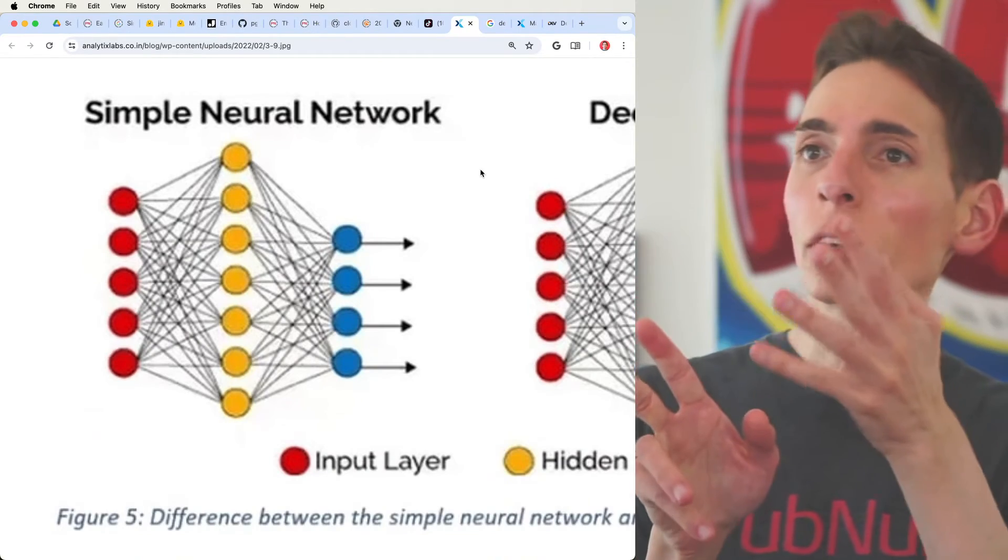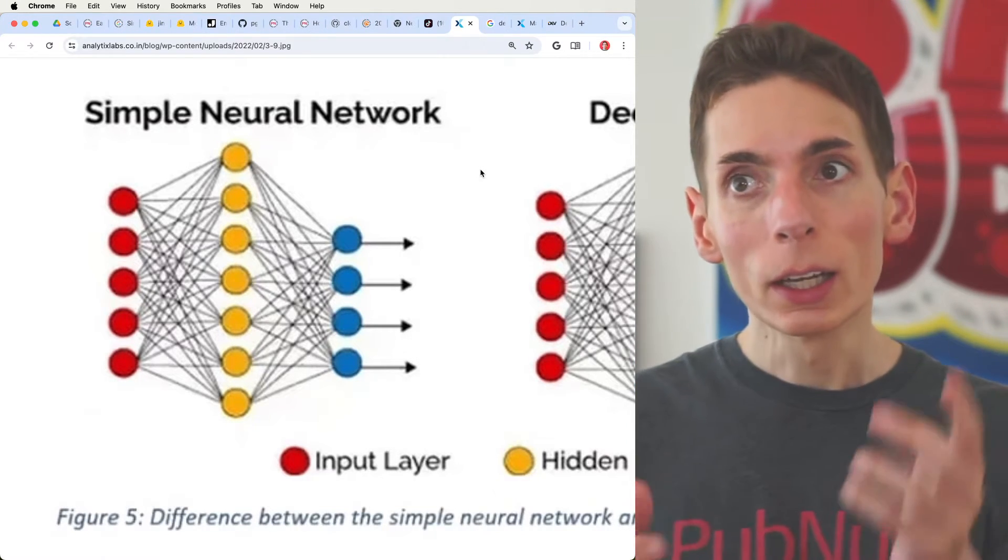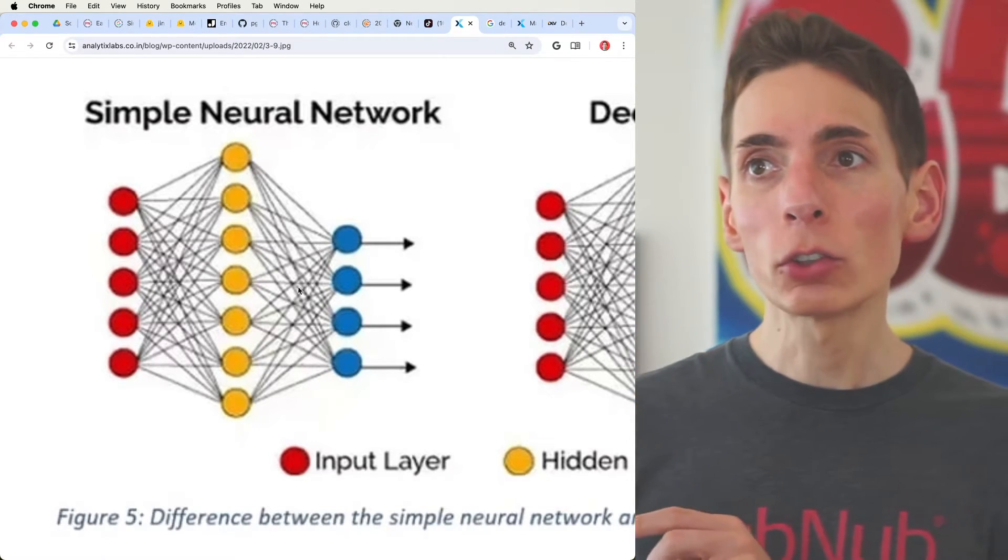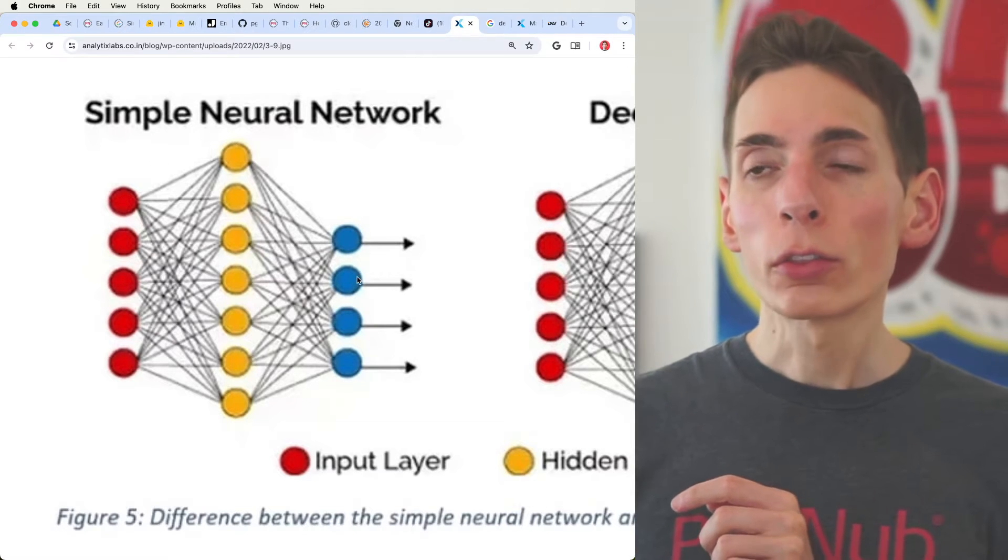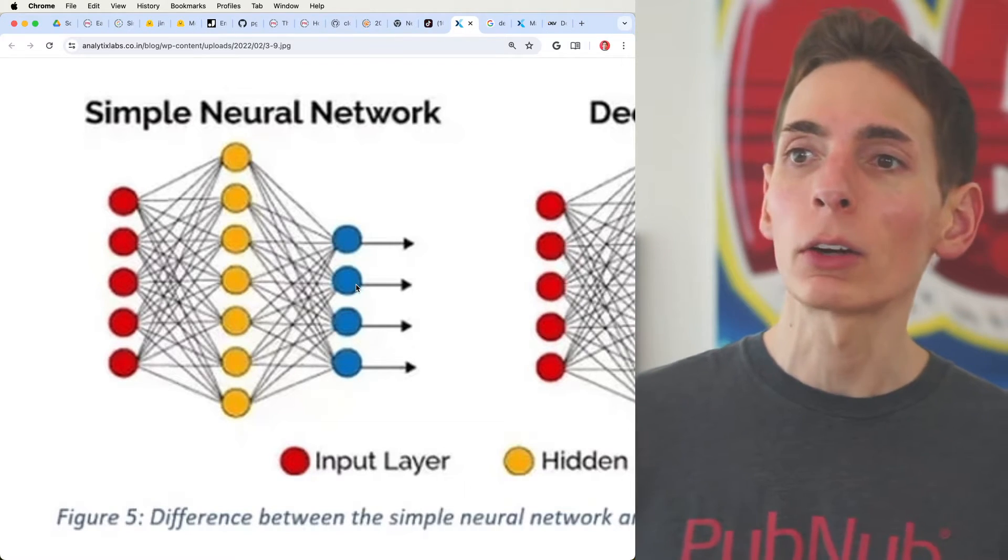It kind of looks like this. So we've got a simple neural network, which is your classical machine learning. Now, what we're looking at here on the screen, there are three separate matrices.